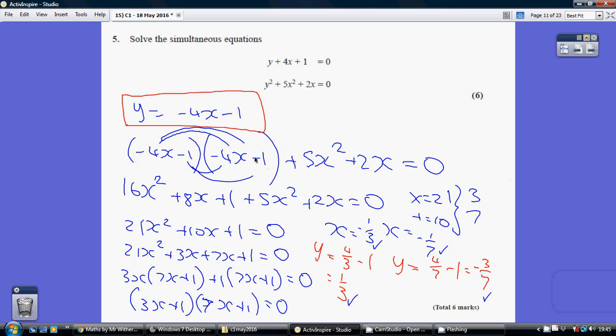So multiply out the pair of brackets, gather together like terms, and simplify. We get 21x squared plus 10x plus 1 equals 0. Now,